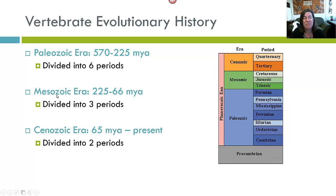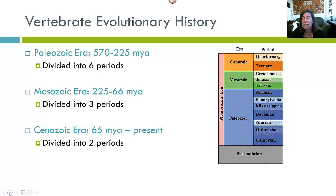The Mesozoic Era is divided into three periods: the Triassic, the Jurassic, and the Cretaceous. You should be relatively familiar with this time period — it's from 225 million to 66 million years ago. Then we have the Cenozoic Era, which has two periods, the Tertiary and the Quaternary. The majority of our time in this class is going to be focusing on the Cenozoic, but I want to briefly talk about the Paleozoic and Mesozoic to put everything into context.